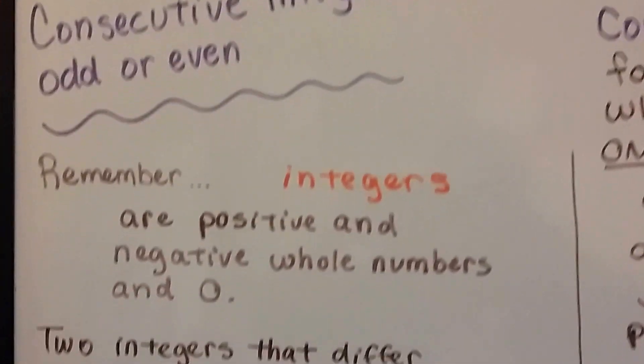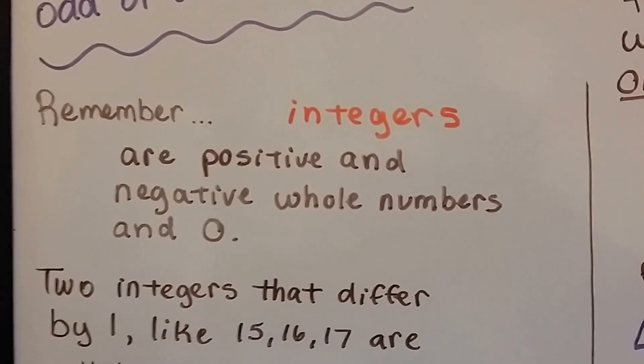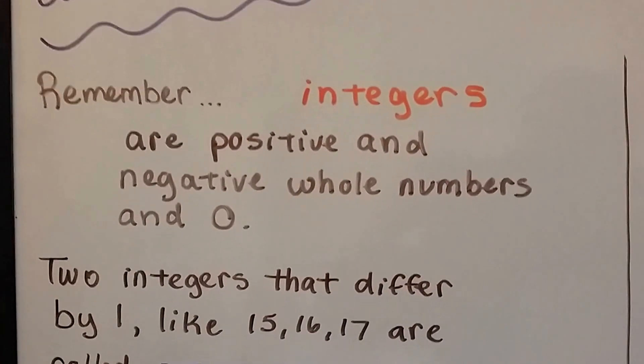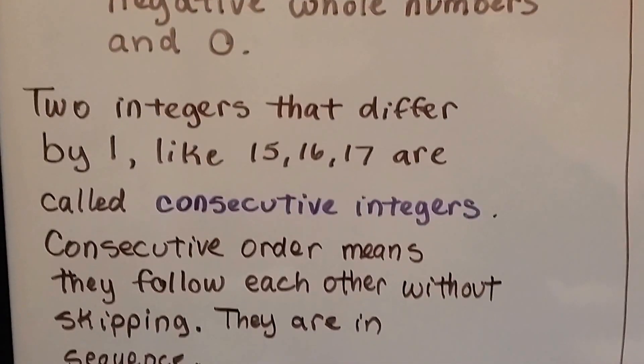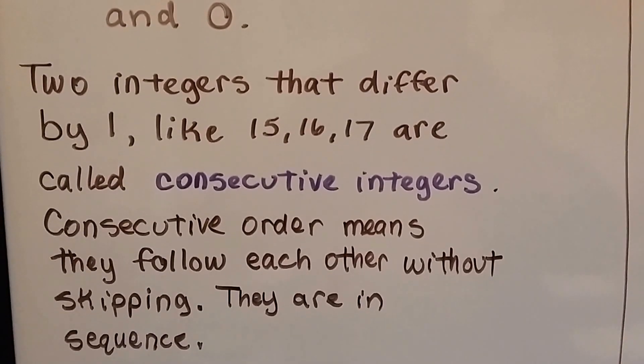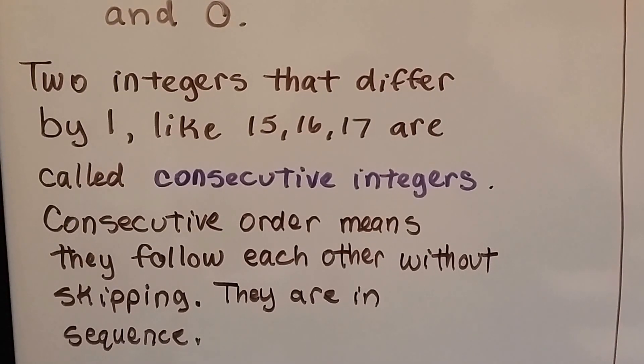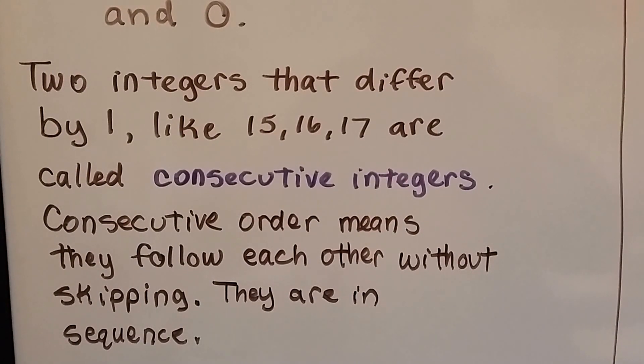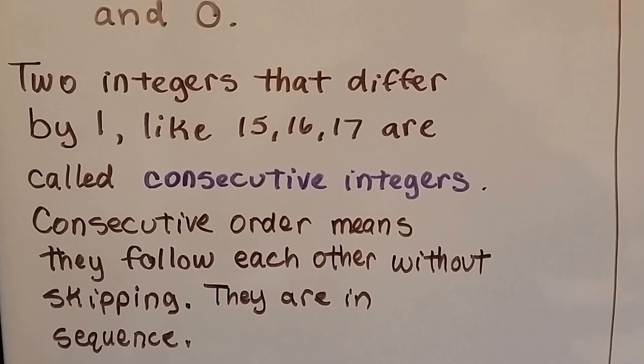This is consecutive integers, odd or even. So remember, integers are positive and negative whole numbers and zero. Two integers that differ by 1, like 15, 16, 17, they're called consecutive integers. Consecutive order means they follow each other without skipping. They're in sequence, one after another.